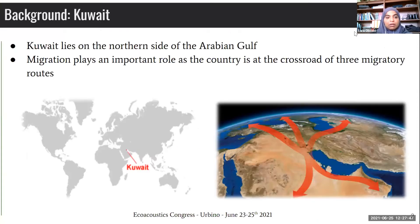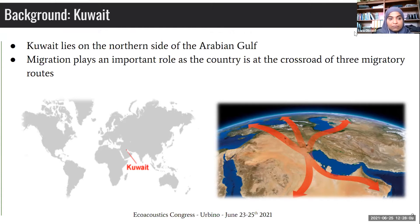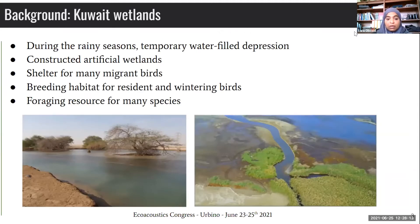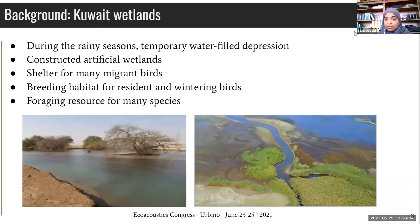Let me give you a background about Kuwait. It lies on the northern side of the Arabian Gulf, just in the middle of the Middle East. Migration plays an important role in the country because Kuwait is at the crossroads of three major migratory routes. Wetlands in Kuwait also play a very important role in bird richness — there are temporary wadi depressions during the rainy season and constructed artificial wetlands. They serve as shelter for many migrant birds, as a breeding habitat for resident and wintering birds, and as a foraging resource for many species.